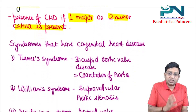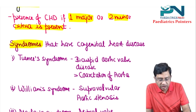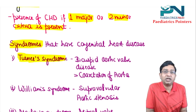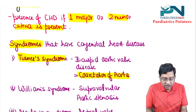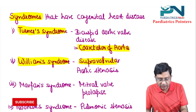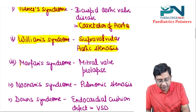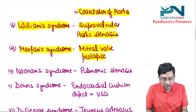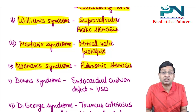You need to remember certain syndromes associated with congenital heart disease. In Turner syndrome, the most common finding is bicuspid aortic valve disease, which is more common than coarctation of aorta. In Williams syndrome, you get supravalvular aortic stenosis. In Marfan syndrome, you get mitral valve prolapse. In Noonan syndrome, the right side of the heart is affected and you particularly get pulmonary stenosis.